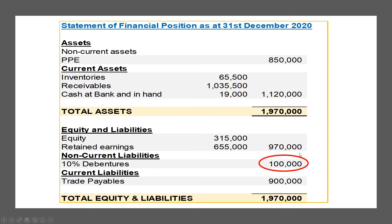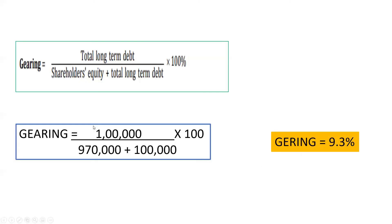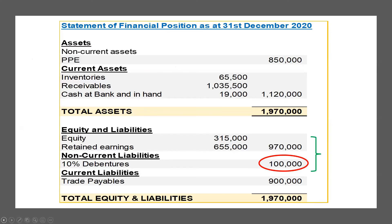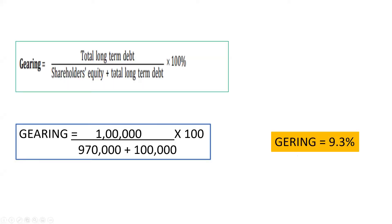We need to calculate the debt as a percentage of the total equity and debt. The debt is 100,000 and the equity is 970,000. So 100,000 is the debt, taken as a percentage of shareholders equity plus long-term debt. When you calculate this, the gearing ratio will be 9.3%.